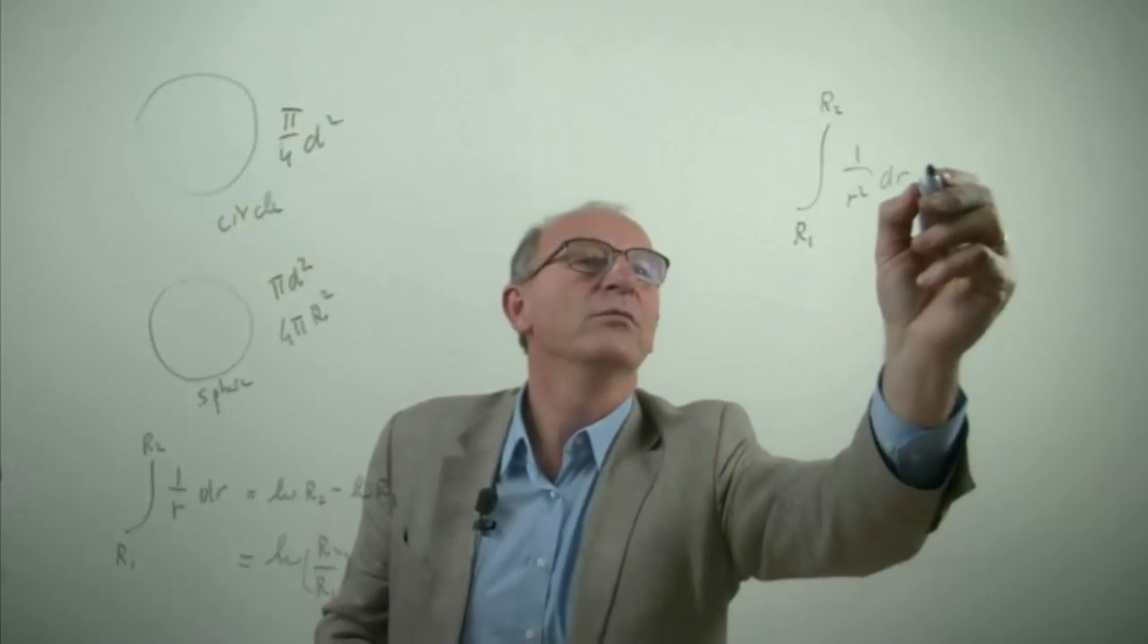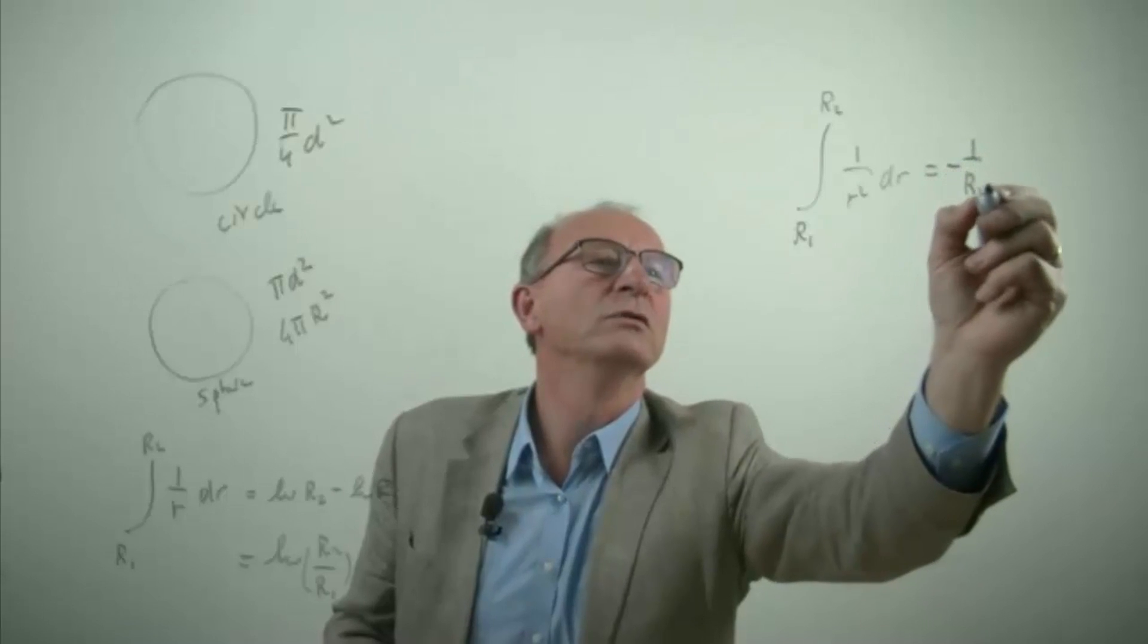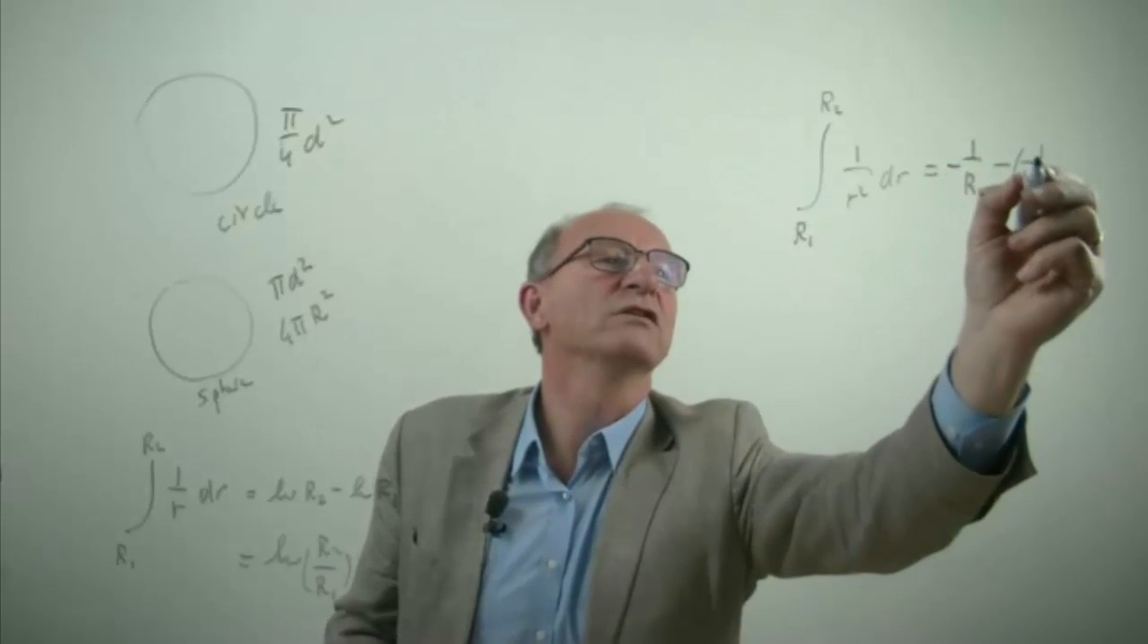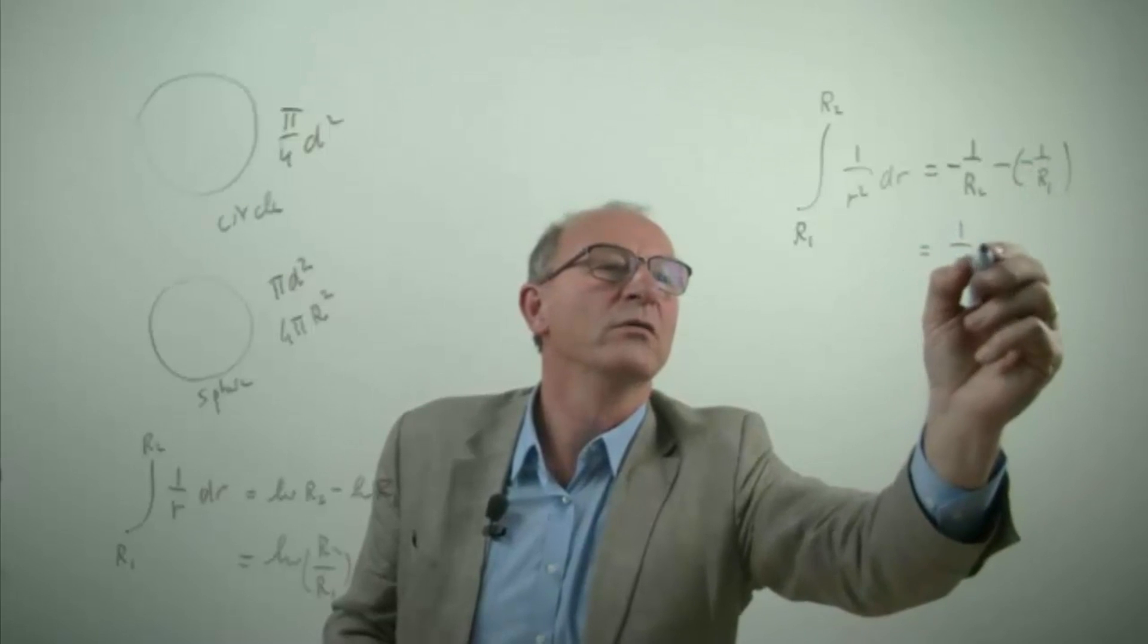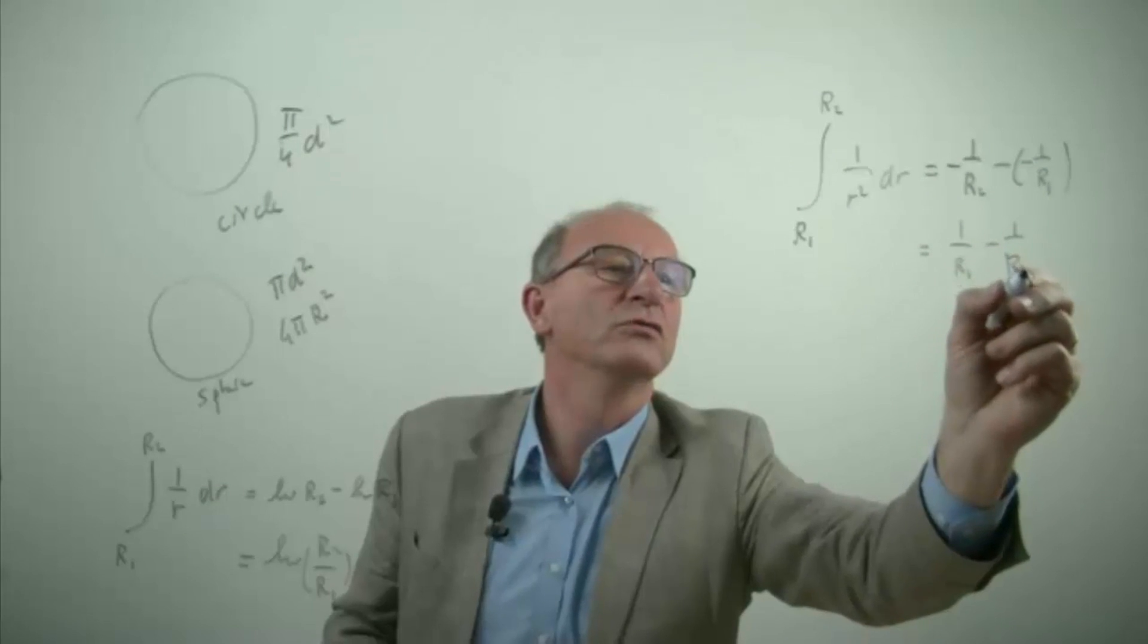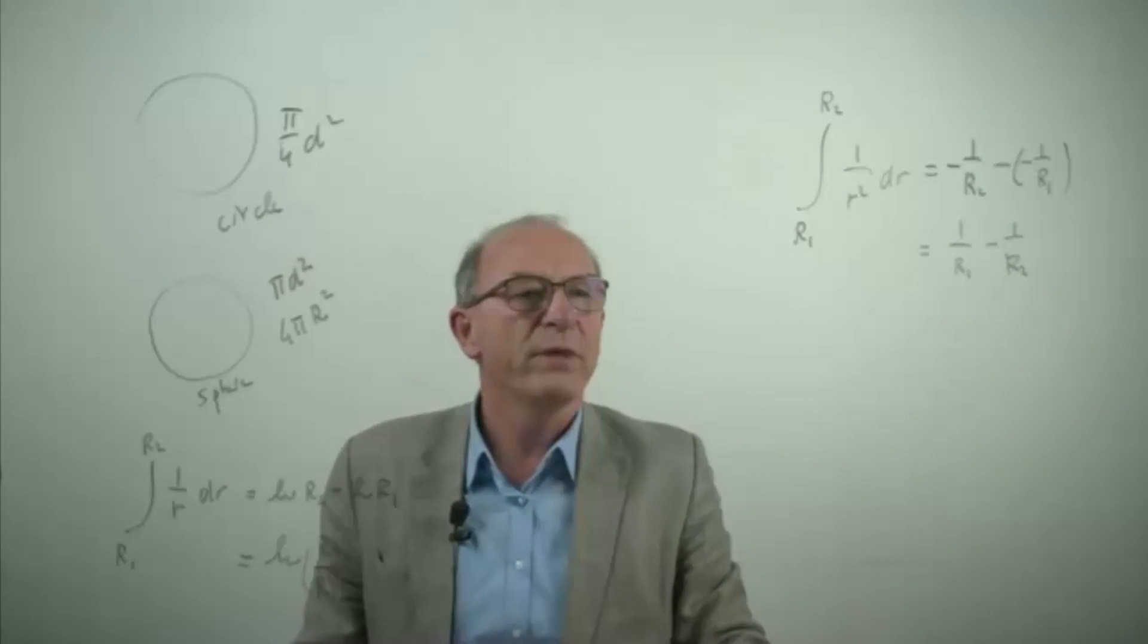But this is quite different because the answer on this one is minus r2 minus minus 1 over r1, which is 1 over r1 minus 1 over r2. It looks quite simple but sometimes people make a mistake.